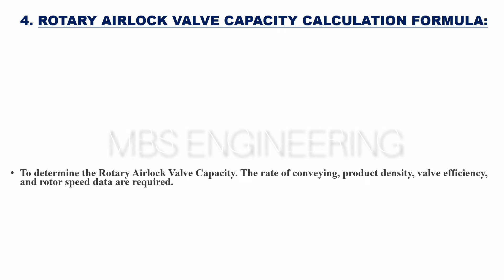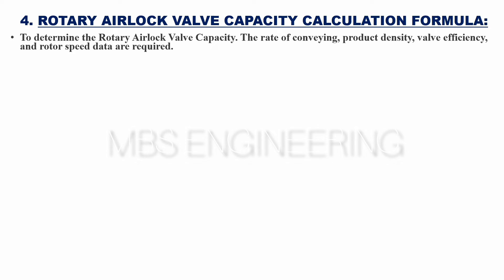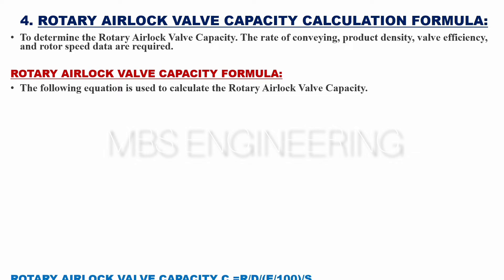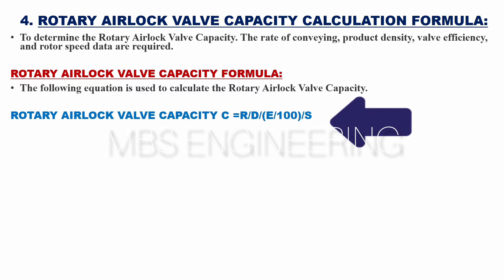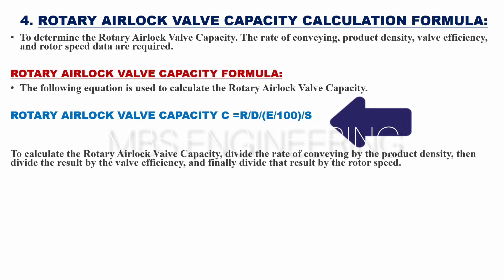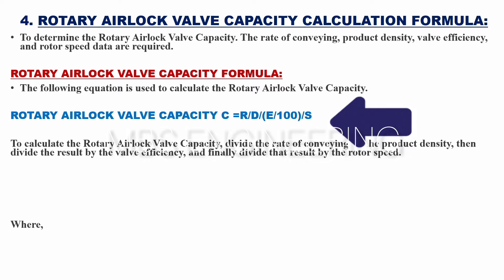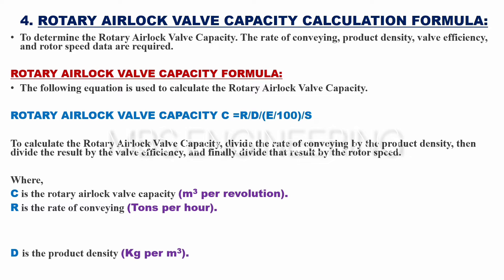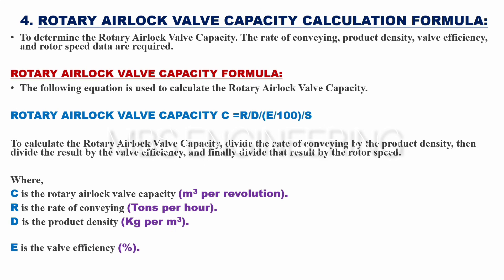To determine the rotary airlock valve capacity, the following data are required: rate of conveying, product density, valve efficiency, and rotor speed. The capacity formula is: C = (R / D) × (A / 100) / S. Where C is capacity in cubic meters per revolution, R is the rate of conveying in tons per hour, D is the product density in kg/m³, A is the valve efficiency in percent, and S is the rotor speed in RPM.